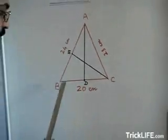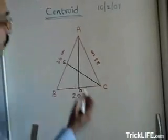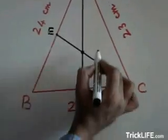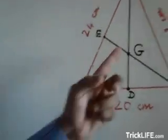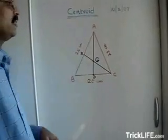Similarly, you can draw from B also. And all these medians, they pass through a point. And this point is called as centroid. We represent it by a letter G. So G here represents the centroid of the given triangle ABC.